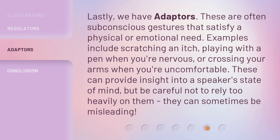Lastly, we have adapters. These are often subconscious gestures that satisfy a physical or emotional need. Examples include scratching an itch, playing with a pen when you're nervous, or crossing your arms when you're uncomfortable. These can provide insight into a speaker's state of mind, but be careful not to rely too heavily on them. They can sometimes be misleading.